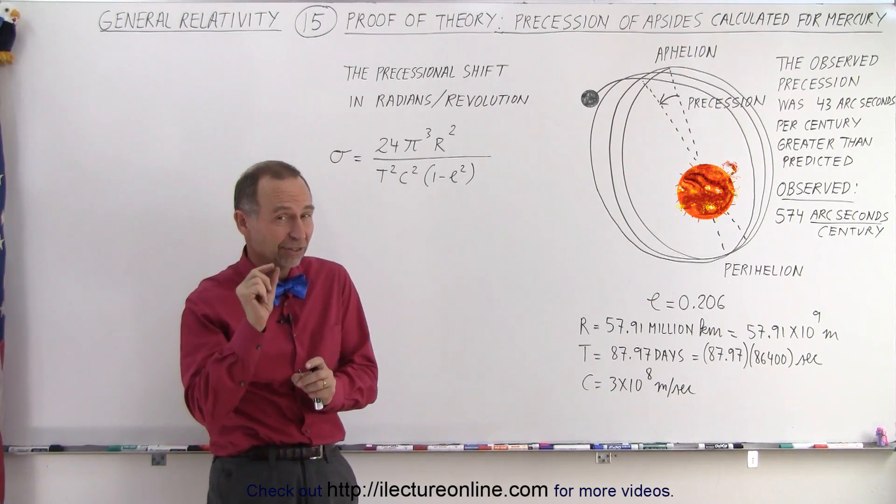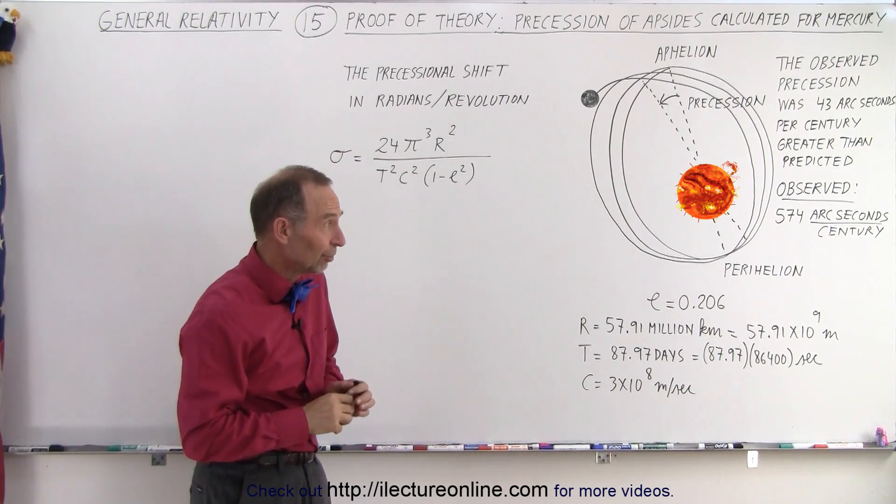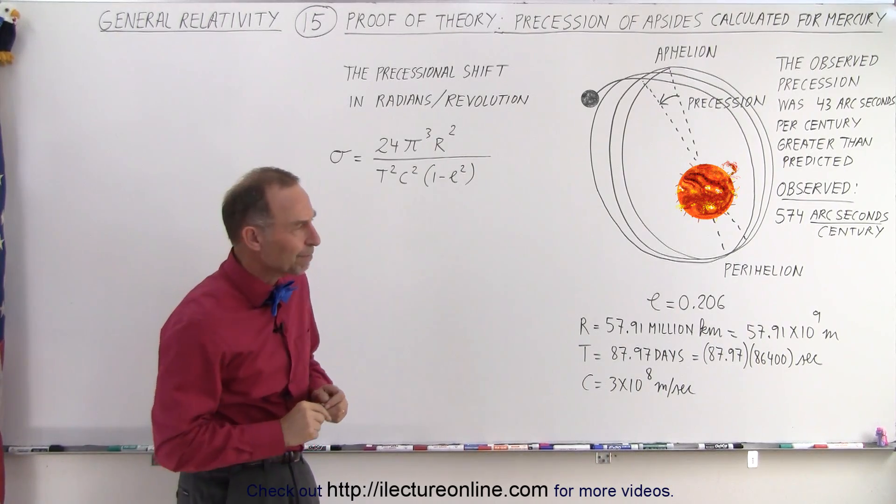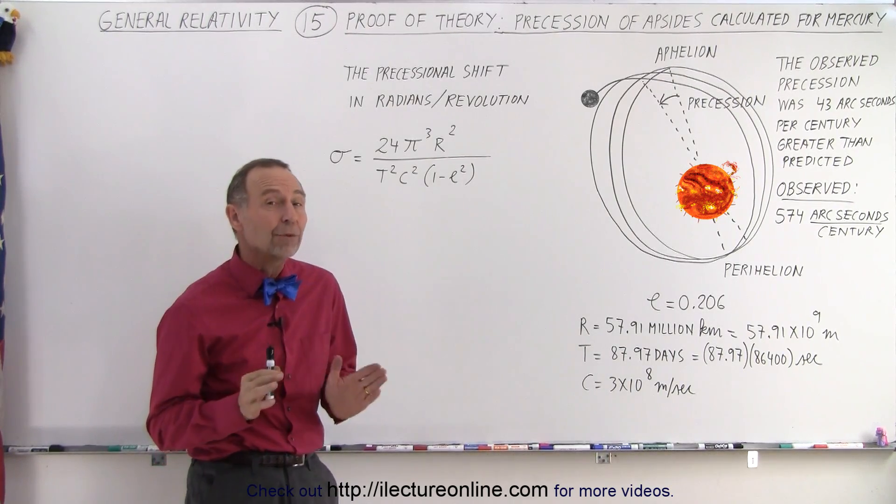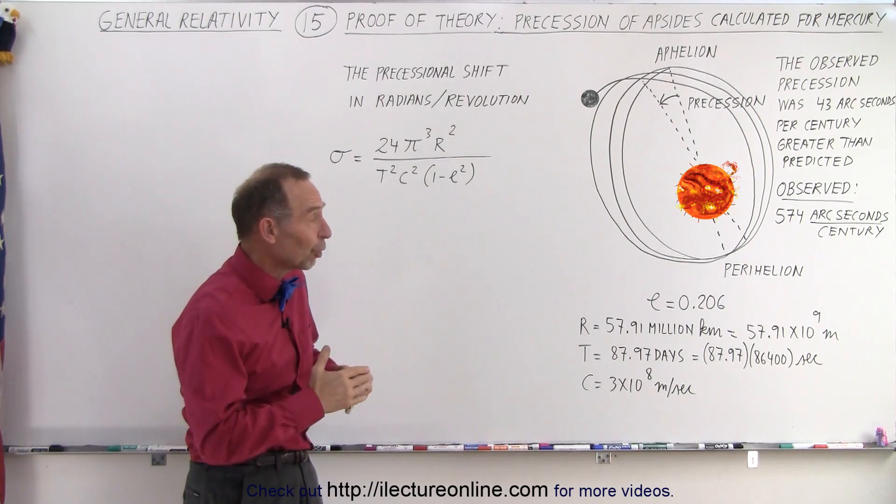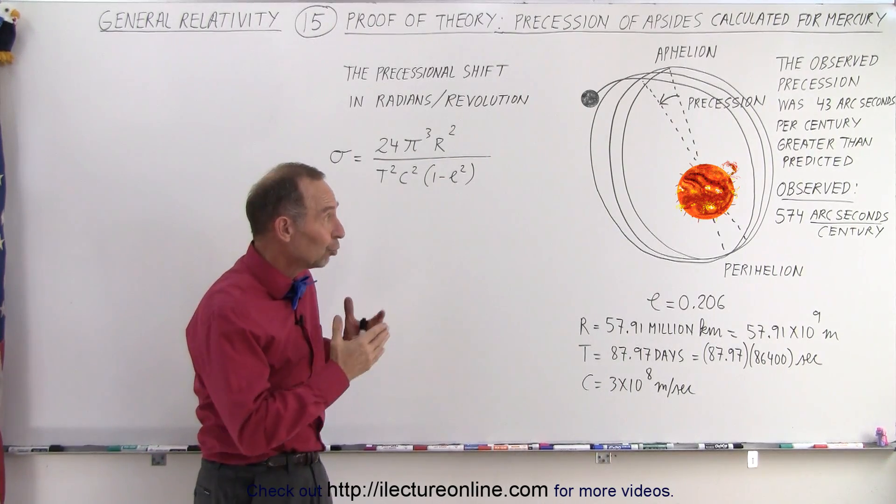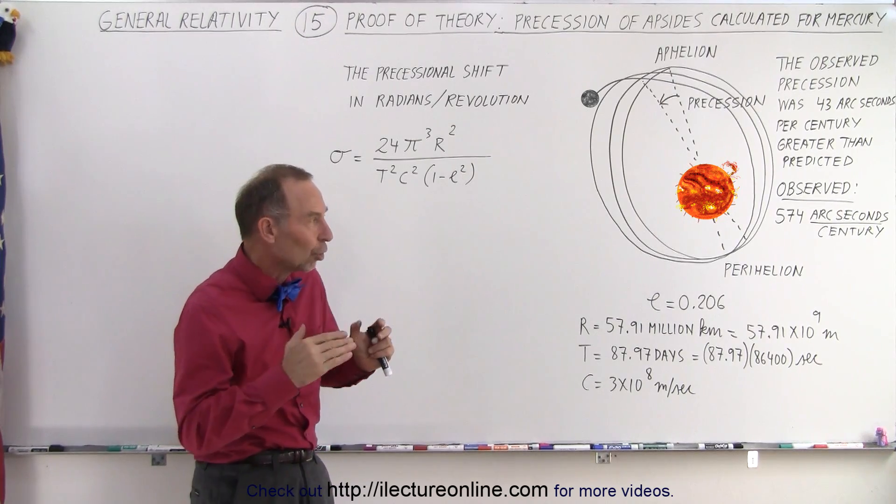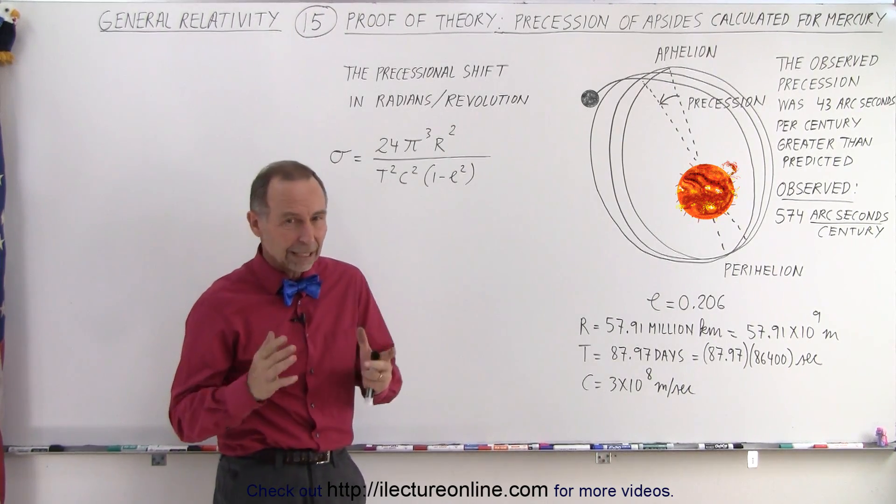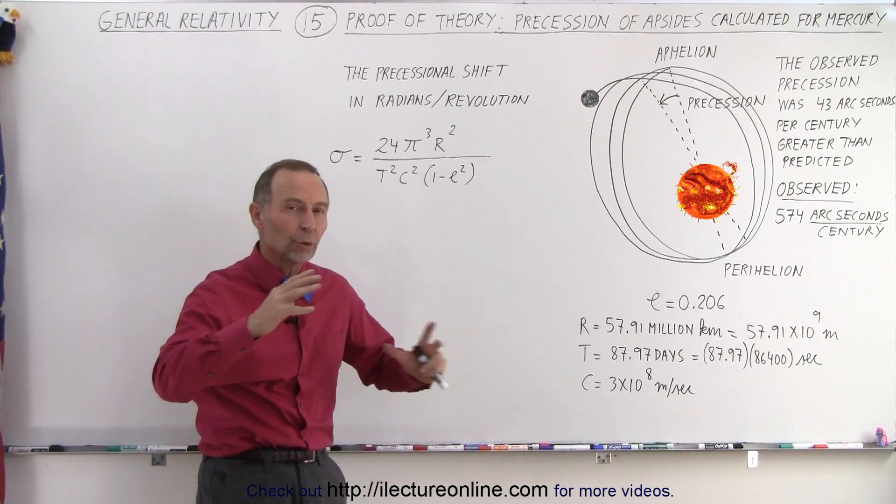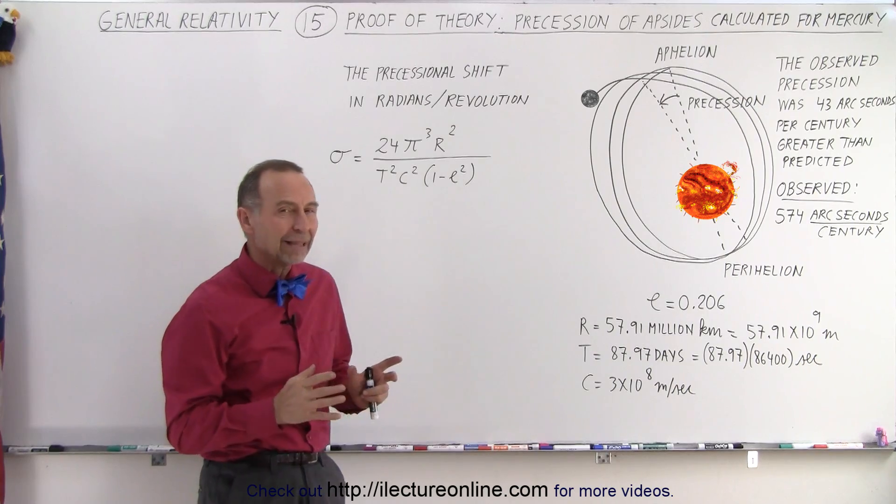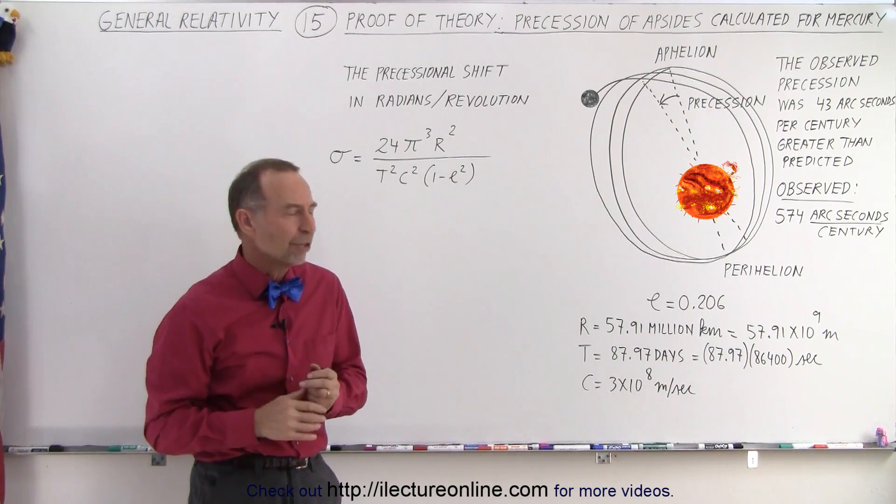Now that doesn't look like a lot because an arcsecond is a very small amount, so 574 arcseconds is just a small fraction of a degree. But nevertheless, they were able to measure that. They've always known that for almost 200 years as to how big that precessional rate was. But when they then calculated the cause of that precessional rate, taking into account where all the planets were located, it turned out that 574 seemed like too big of a number.